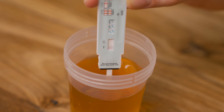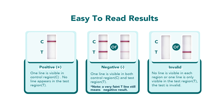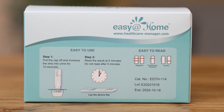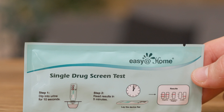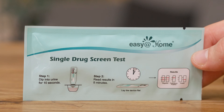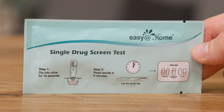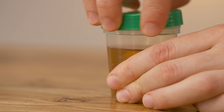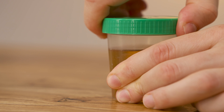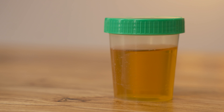If the drug level is below this threshold, the test will show a negative result, indicating that the substance is either absent or present in a very low amount. It's important to follow the instructions carefully when collecting and testing your sample to ensure accurate results. This includes proper sample collection, storage, and adhering to the test procedure guidelines.